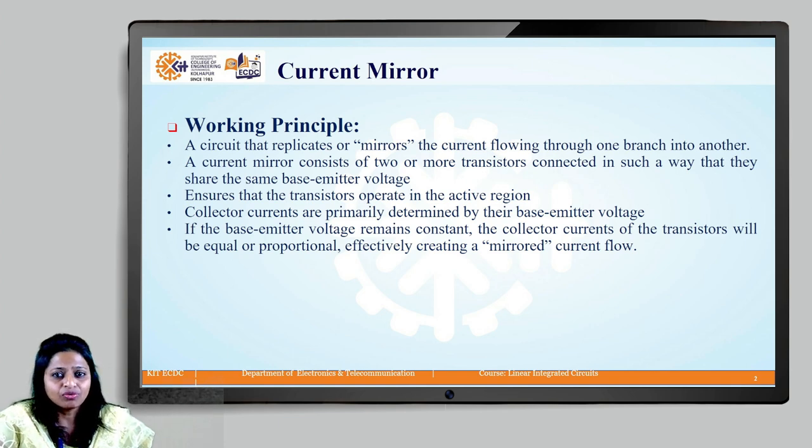Current mirror circuit consists of two or more transistors connected in such a way that they share the same base emitter voltage. This configuration ensures that the transistors operate in the active region. Since the collector currents are primarily determined by their base emitter voltages, if the base emitter voltage remains constant then the collector currents of the transistors will be equal or proportional, creating a mirror current flow.